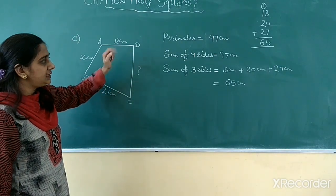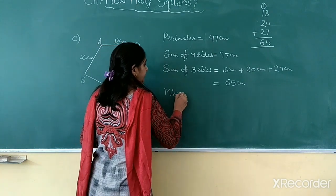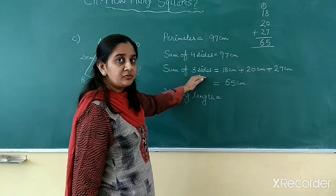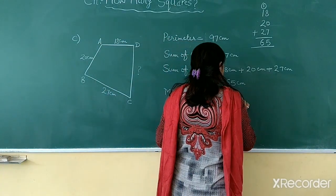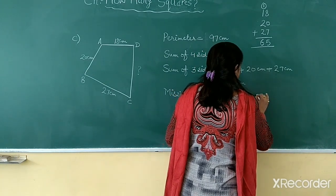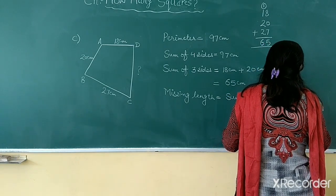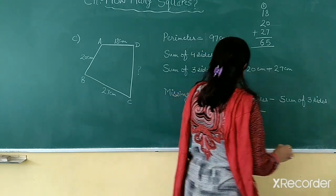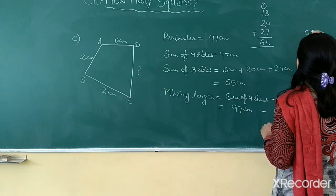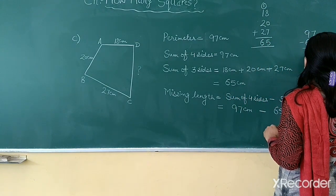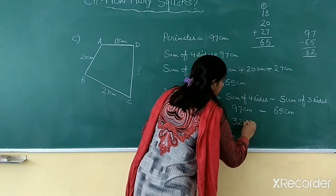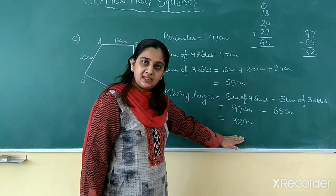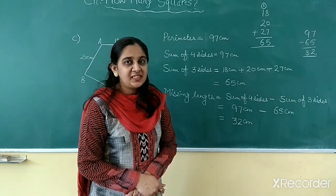Now children, we want to find out this missing length, which is CD. For this missing length, we will write: missing length equals sum of 4 sides minus sum of 3 sides. Sum of 4 sides is 97 centimeter, minus the sum of 3 sides which is 65 centimeter. So we have found out that the missing length CD is 32 centimeter. I hope you have understood these questions. Thank you and have a nice day.